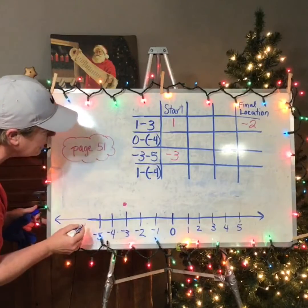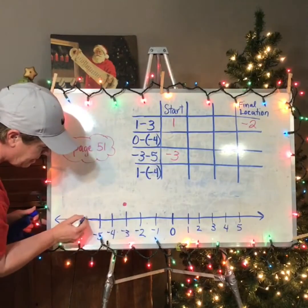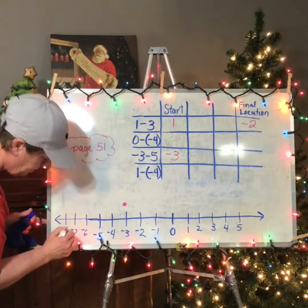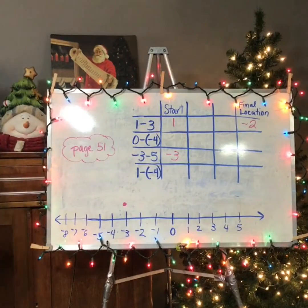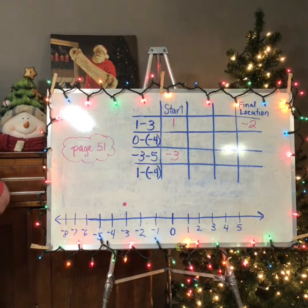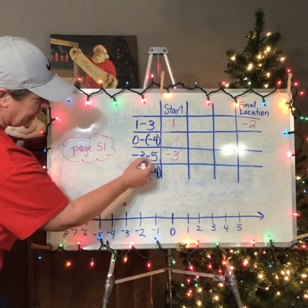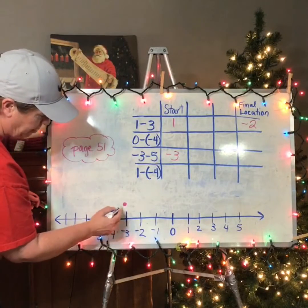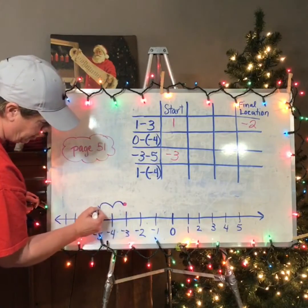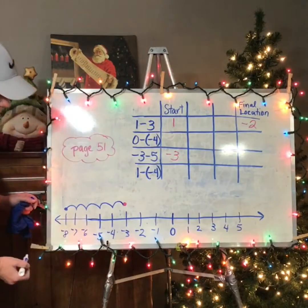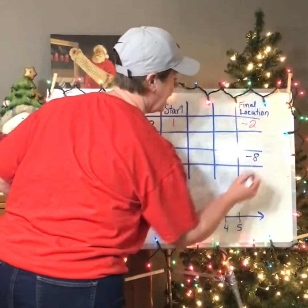I need to head to the left five more spots. So if I start at negative three and I take away five more, I'm going to drop back five more spots: one, two, three, four, five. And I'm going to end up here at negative eight. So my answer is negative eight.